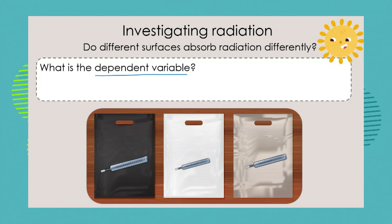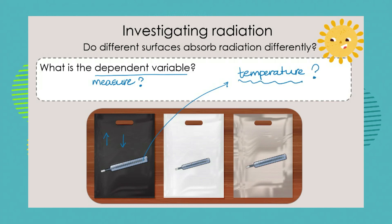What is the dependent variable? The dependent variable is what I am going to measure, and in this case it is temperature. If the black bag absorbs the most radiation, it's going to get hotter. If it absorbs less radiation, it's going to be cooler. I start out not knowing the temperature, so that is what I'm going to measure — temperature is my dependent variable because it is dependent on the colour of the bag.